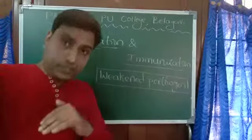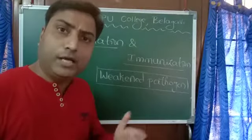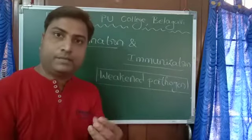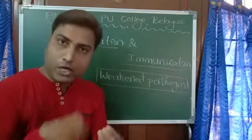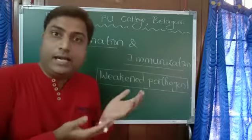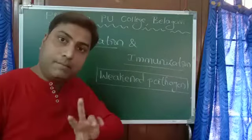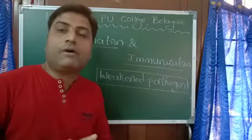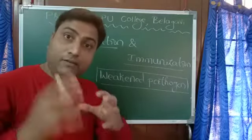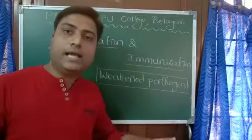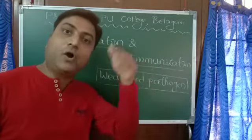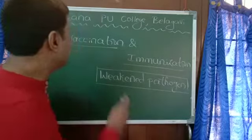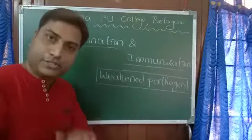Now, in future — maybe after 1 year, 2 years, 5 years, or 10 years — when this pathogen naturally attacks our body, antibodies are already ready. Our immune system has the memory of the previous encounter, so we will not suffer from that disease. The effect of the entered pathogen is neutralized by the antibodies already prepared. This concept is called vaccination and immunization.